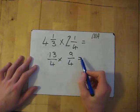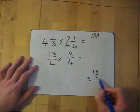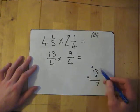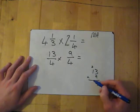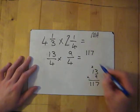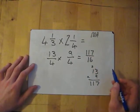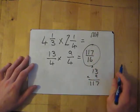So multiply the top 2 numbers, and if you need to, do a quick multiplication. 13 times 9. 9 times 3 is 27. 9 times 1 is 9, add 2 gives me 11. So that will be 117 at the top. And then at the bottom, 4 times 4 is 16. And that's where it is, 117 over 16.